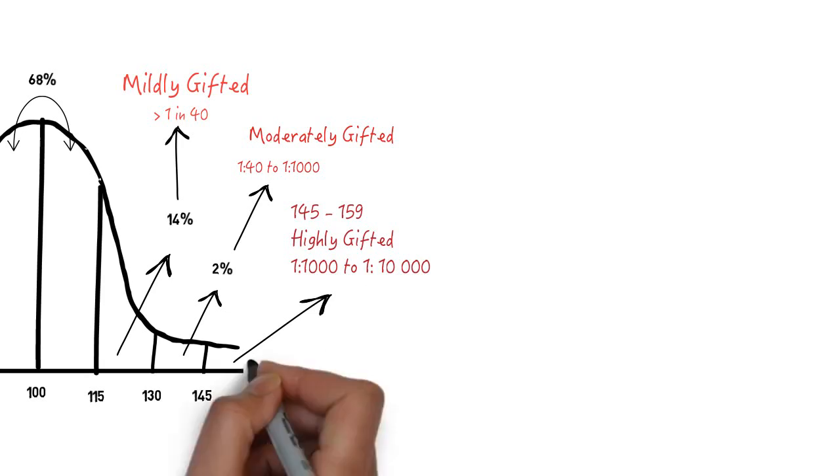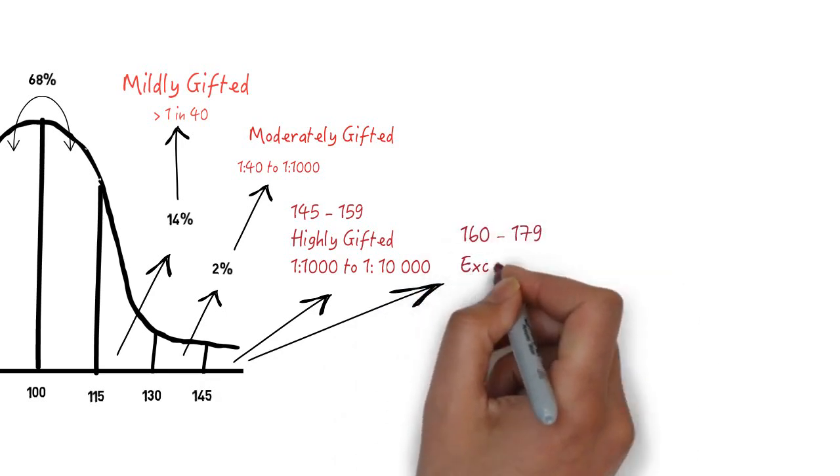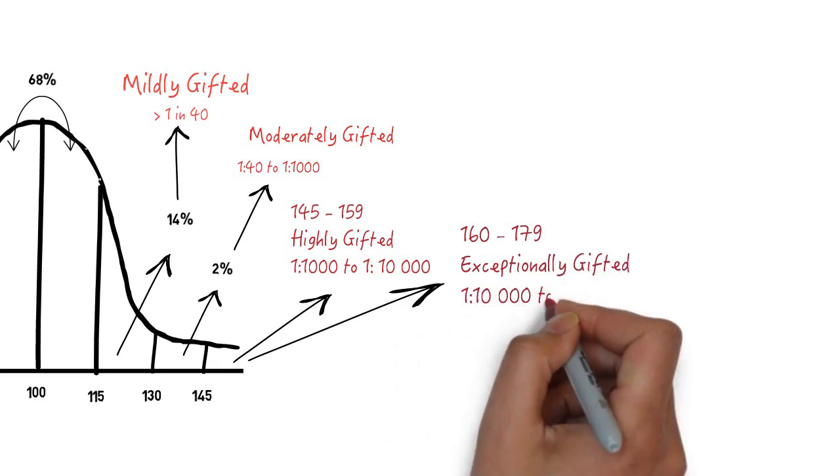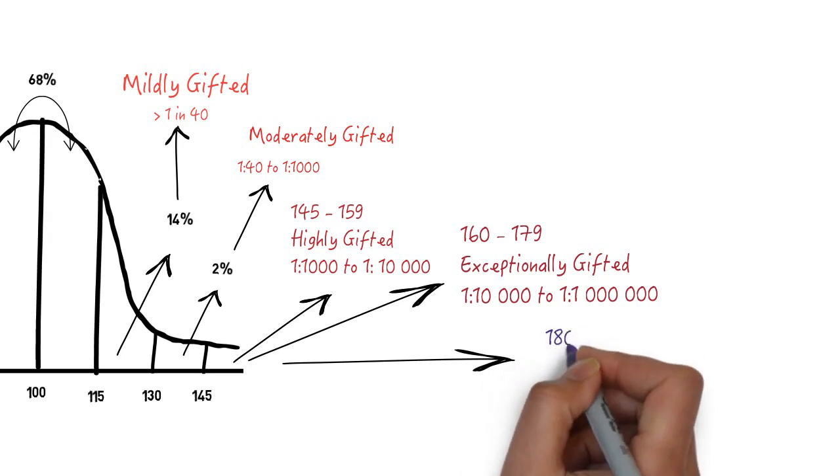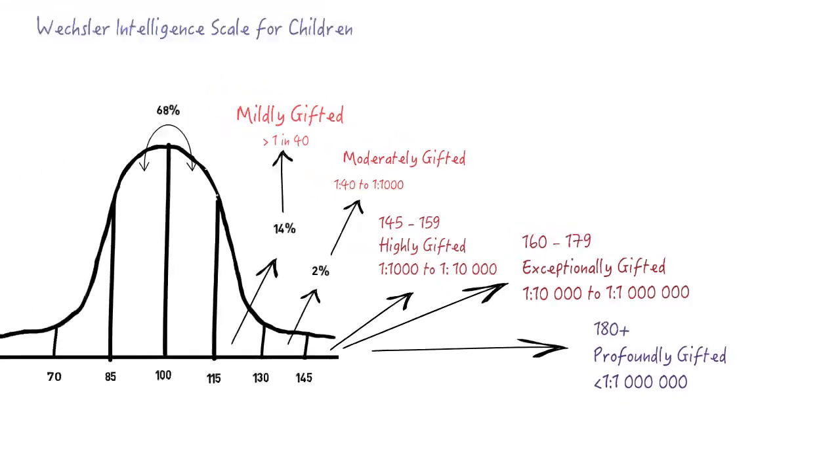Between 160 and 179 IQ points, there are the exceptionally gifted. And they represent roughly 1 in 10,000 up to about 1 in a million individuals. So it's very rare indeed. And the rarest are the profoundly gifted, who have an IQ of 180 plus. And they literally are fewer than 1 in a million.